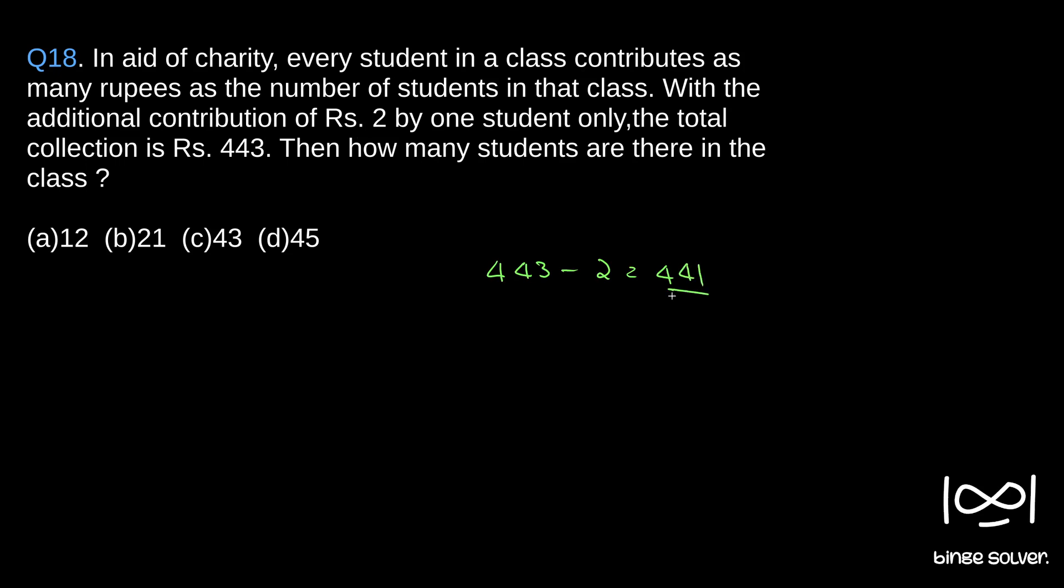So with this 441, if x is the number of students, that implies each person contributed x rupees. So that becomes x into x is equal to 441, or x square is 441.